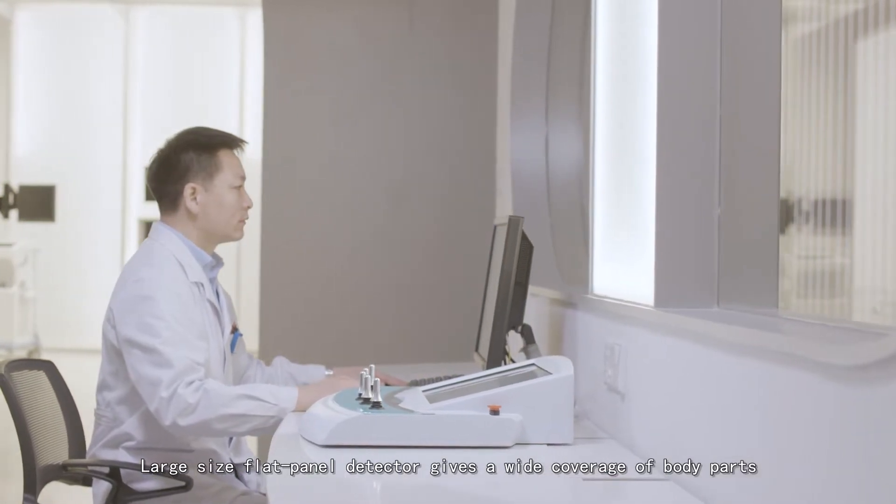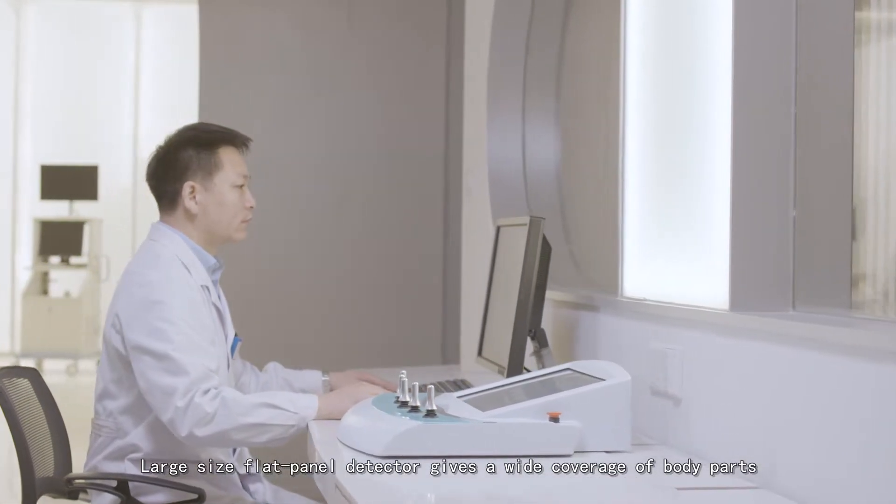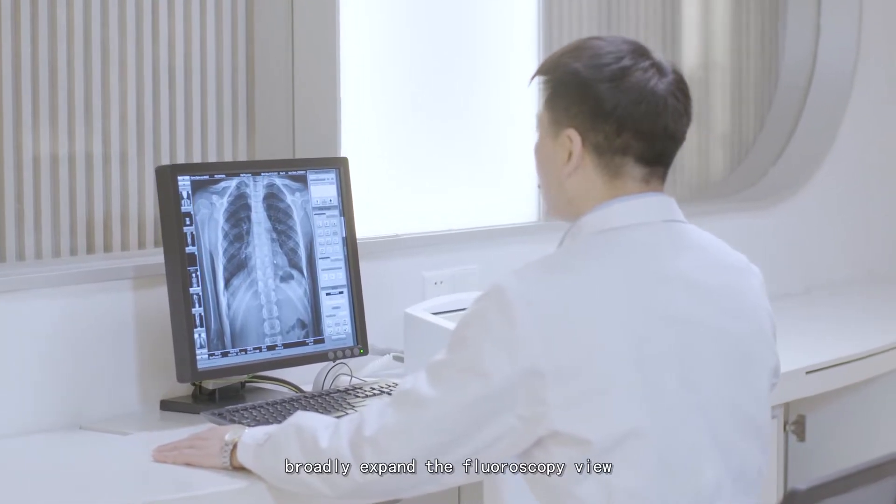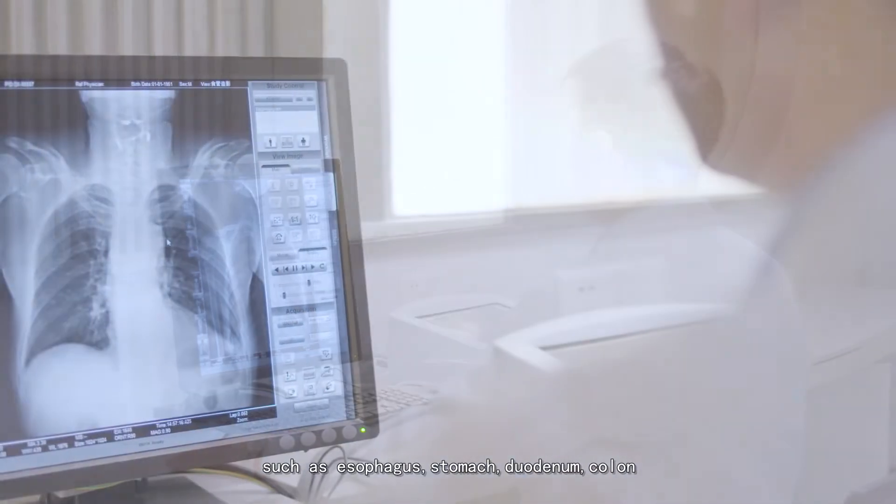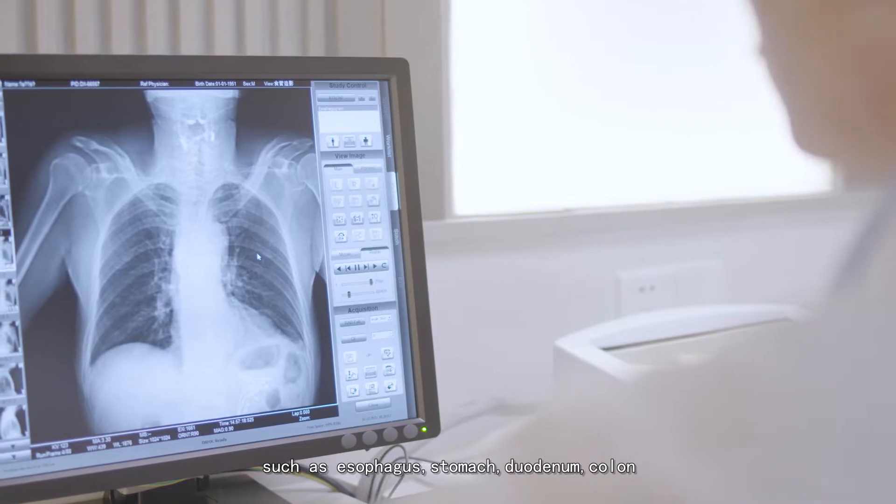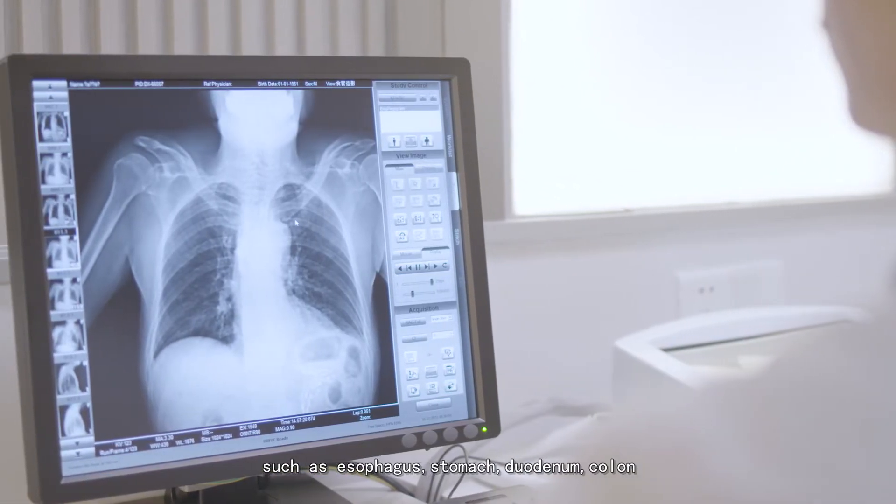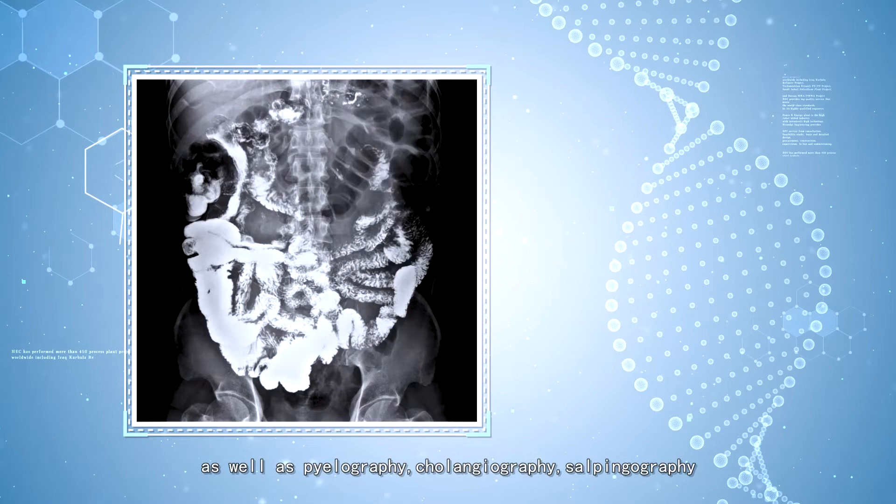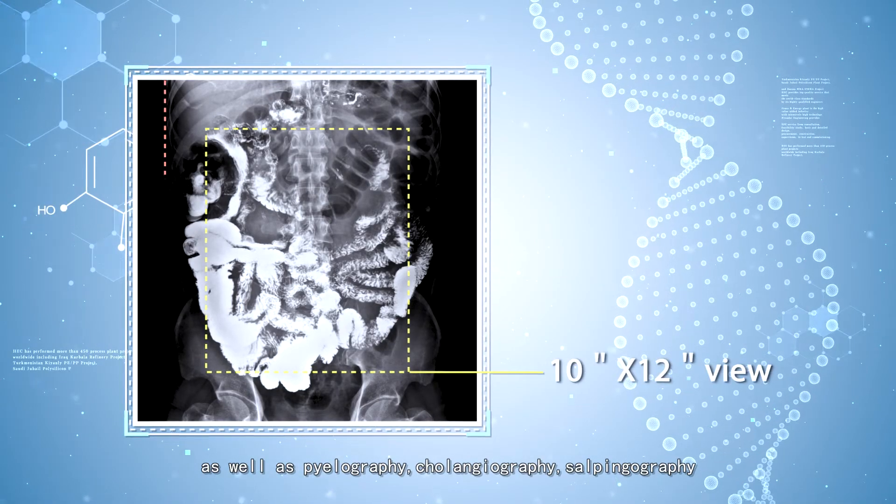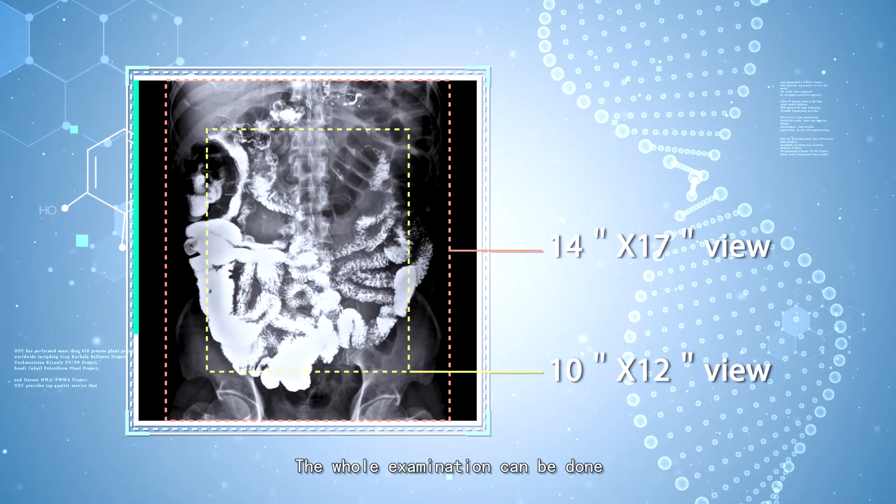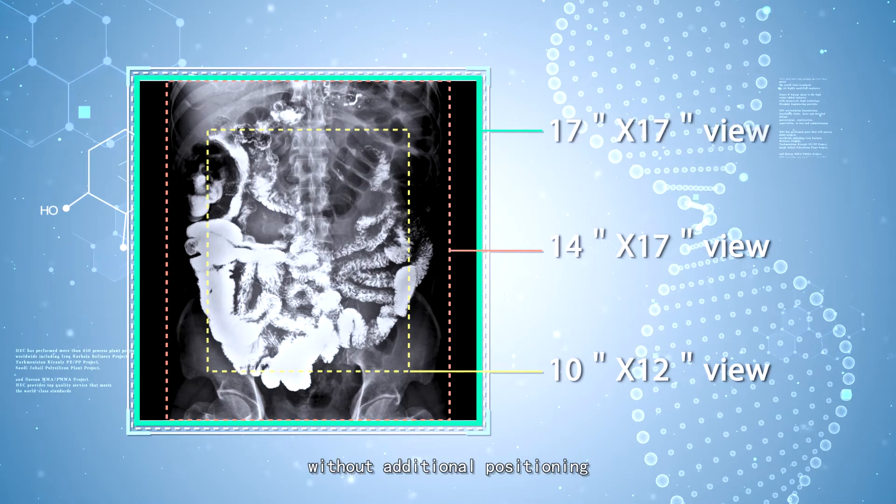Large-size flat panel detector gives wide coverage of body parts, broadly expanding the fluoroscopy view, such as esophagus, stomach, duodenum, colon, as well as pyelography, cholangiography, and salpingography. The whole examination can be done without additional positioning.